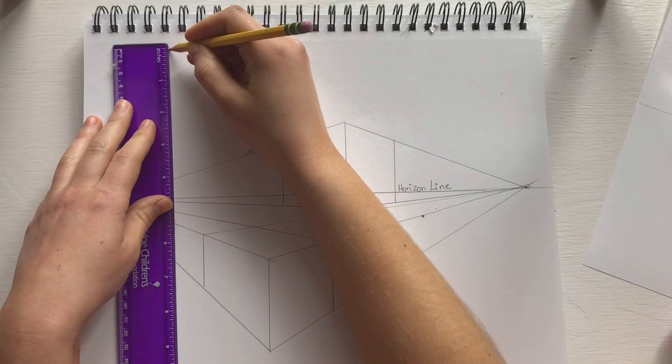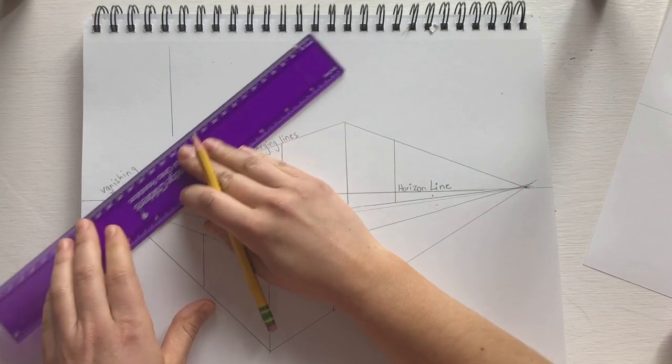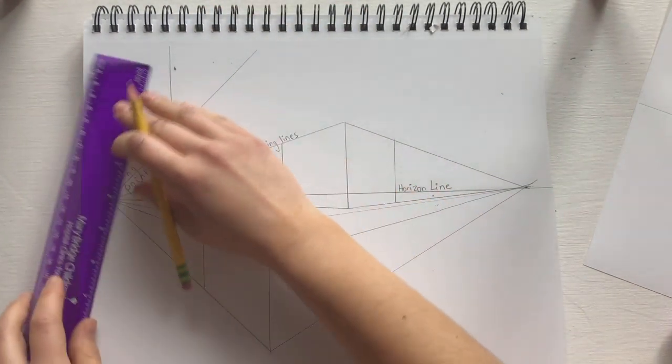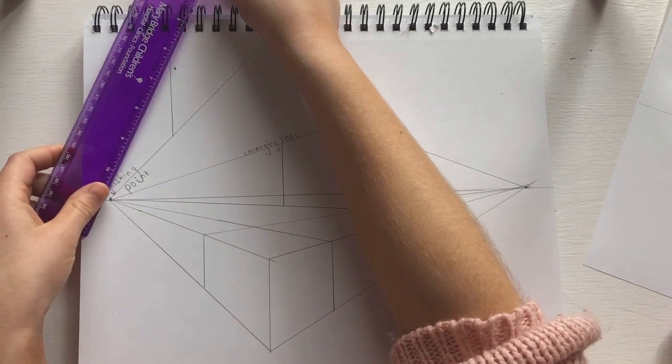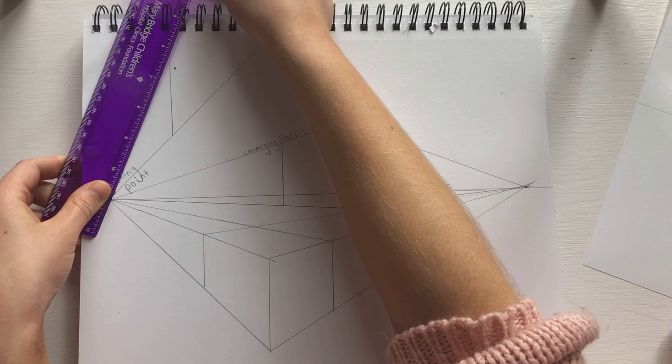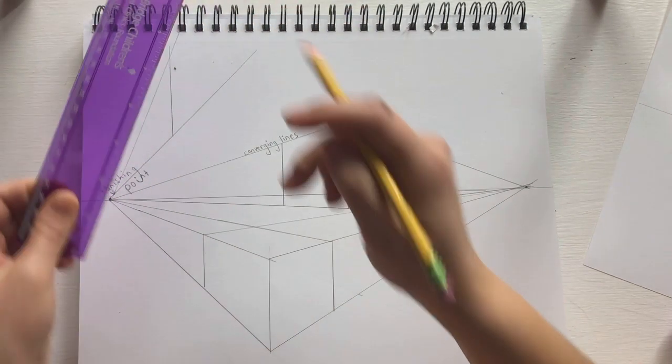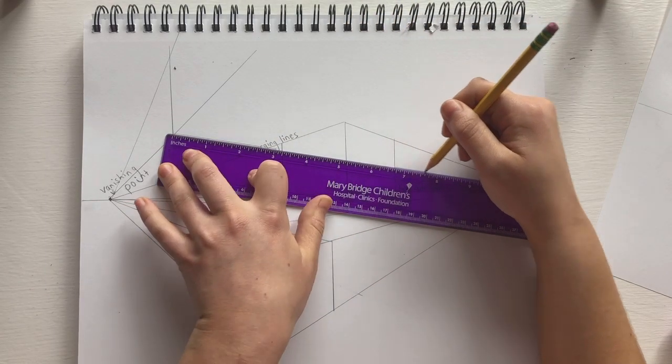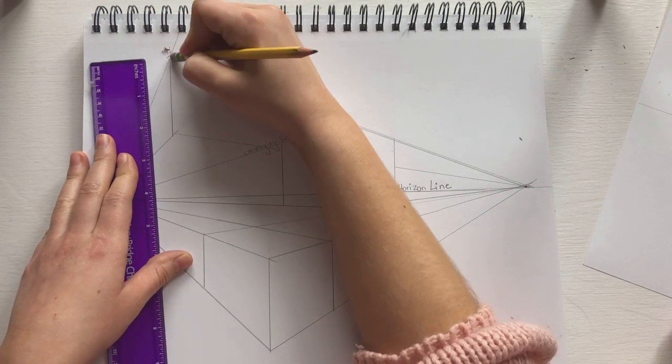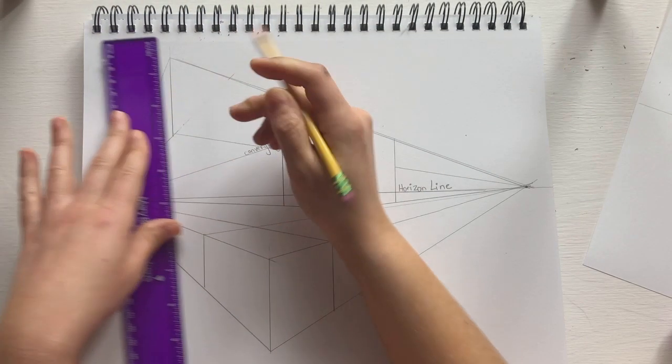Now we're going to draw a box or a cube above the horizon line. First, we've got to establish our corner, and then we're going to draw converging lines from the top and the bottom of that corner. Just like we did with the box below the horizon line, we're going to draw from the bottom of our corner to the opposing vanishing point on both sides.